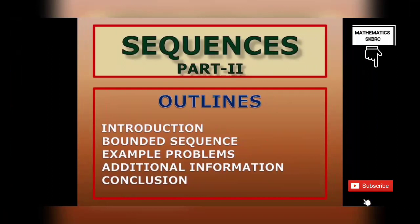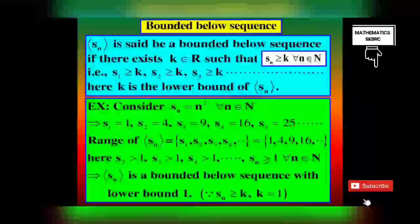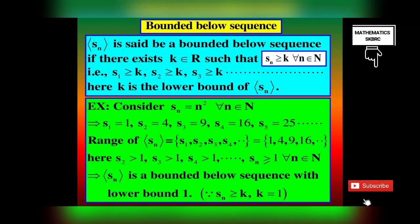Before defining the bounded sequence, first we define the bounded below sequence. A sequence SN is said to be a bounded below sequence if there exists a real number K belonging to R such that SN is greater than or equal to K for all N belonging to N. Here K is the lower bound of sequence SN. Remember, every bounded below sequence has a lower bound.